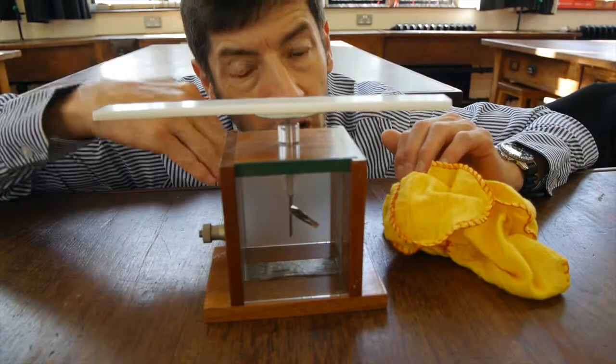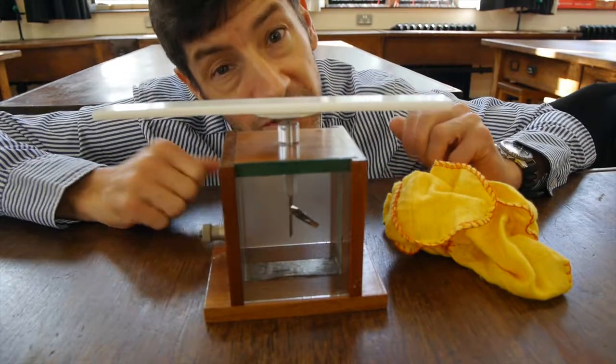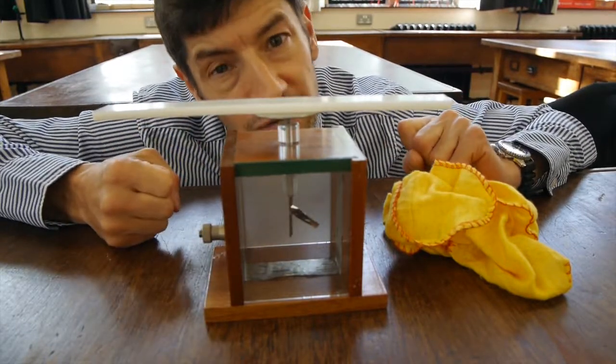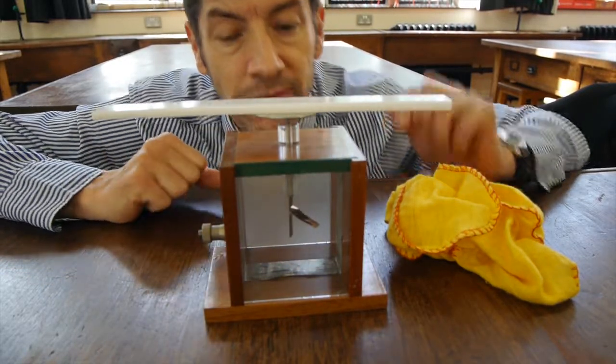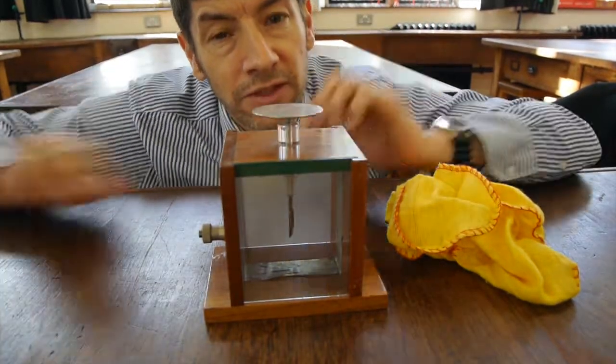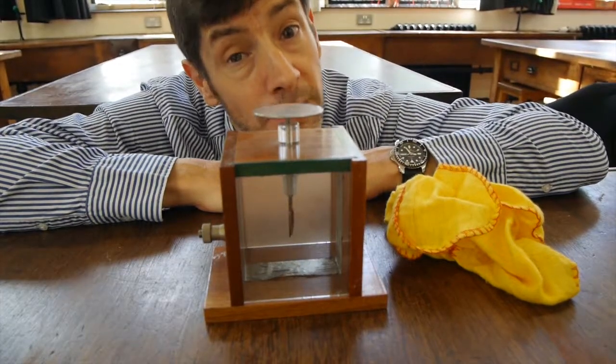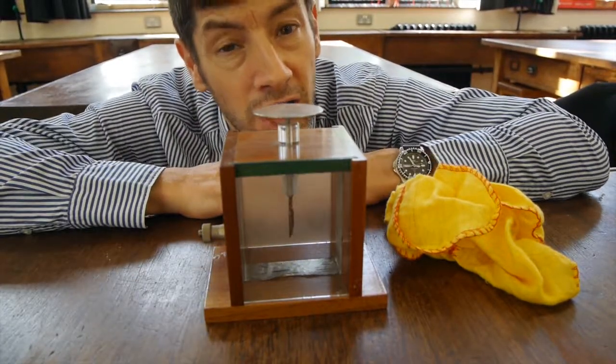The height of the leaf shows you the charge that forms on the electroscope. The higher the leaf, the greater the voltage, the greater the charge. And if I discharge it, the leaf falls down because both the leaf and the metal bar are neutral.